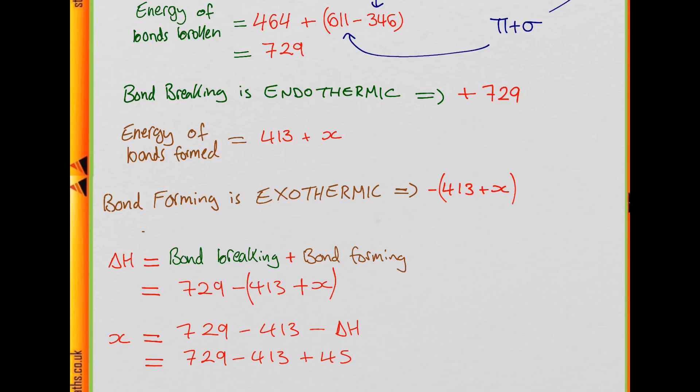We rearrange that to find X. We have X is 729 minus 413 minus delta H. We are given delta H in the question as minus 45. So X equals 729 minus 413 plus 45.